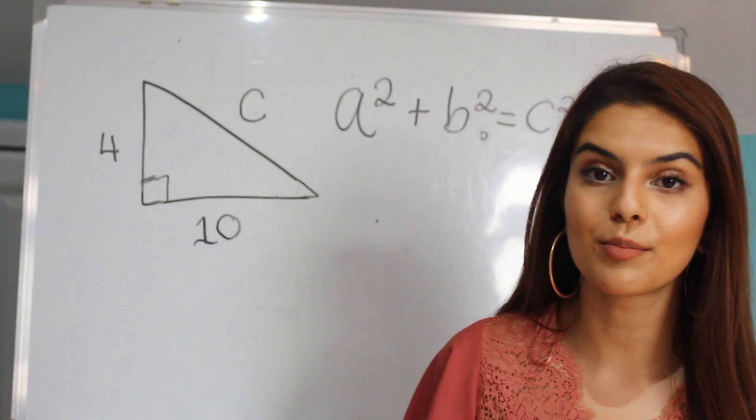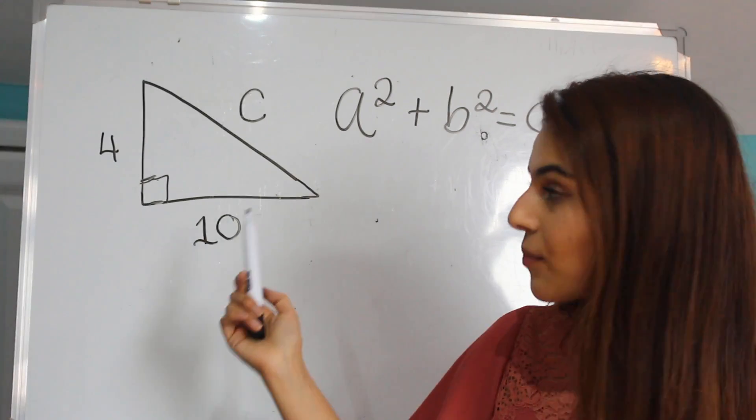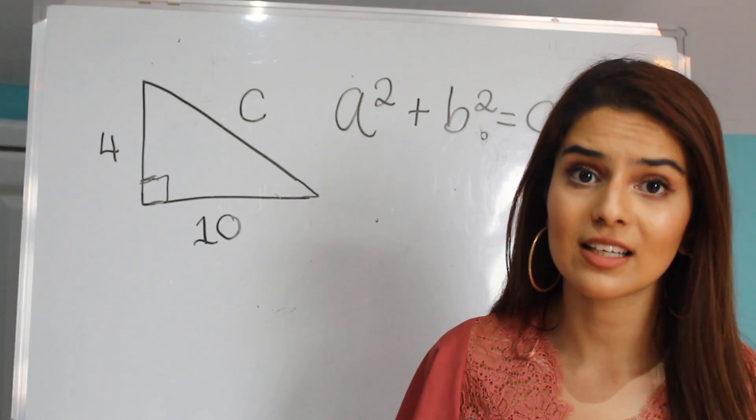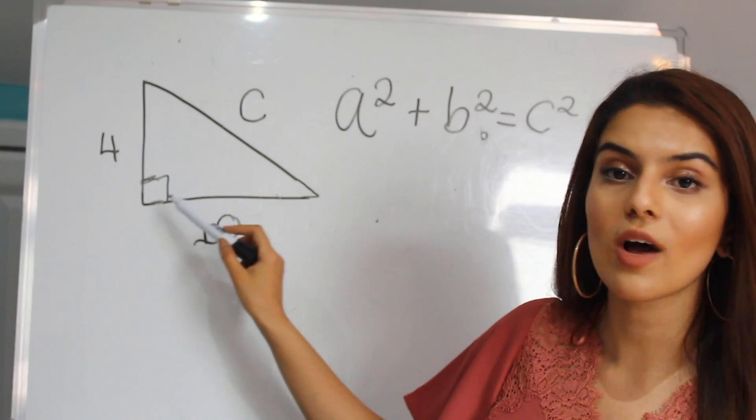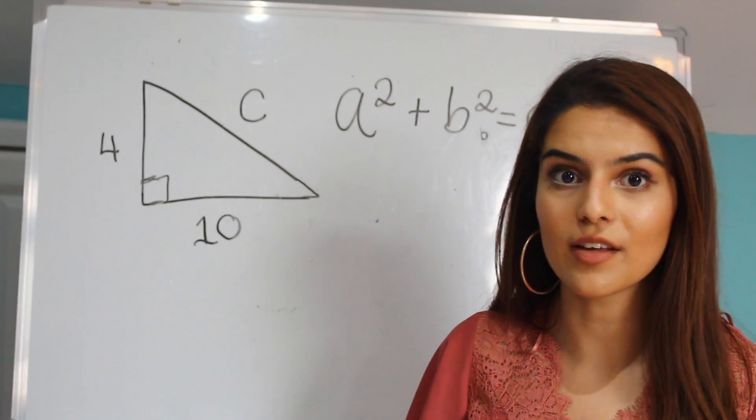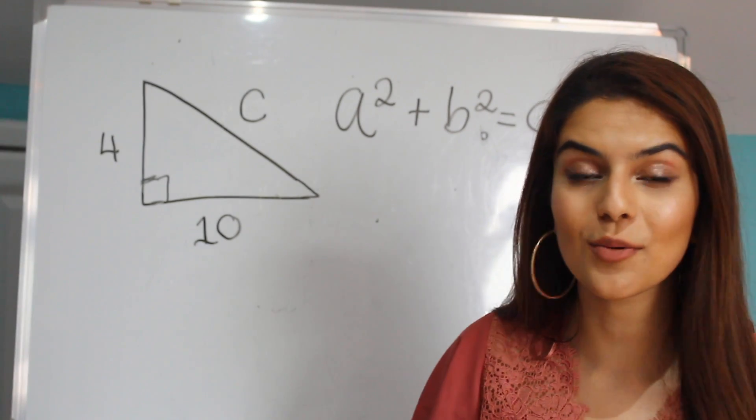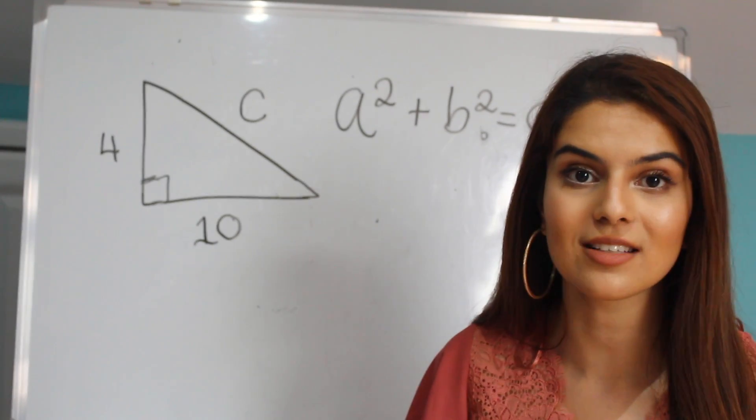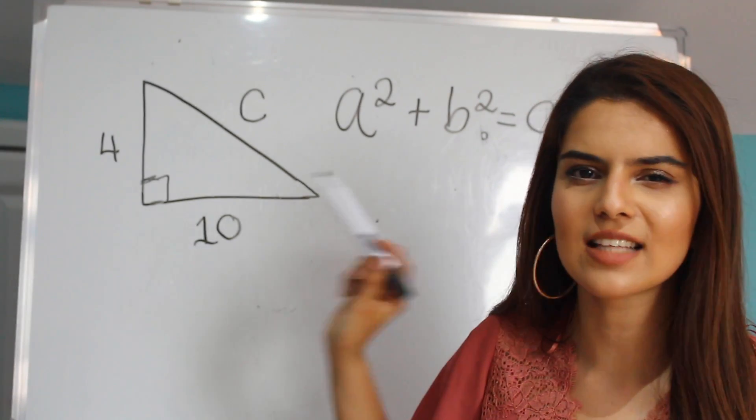Okay, so looking at our first example, we need to find the length of C. Now we know automatically that this is a right angle triangle due to the square side in a corner. So we can use the Pythagoras' Theorem on this. Pythagoras' Theorem is A squared plus B squared equals C squared. It doesn't really matter which side is the A or the B.